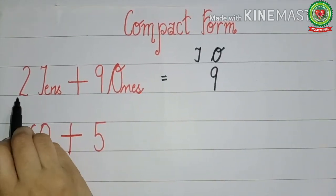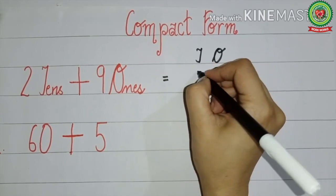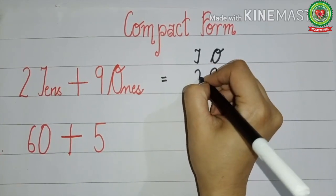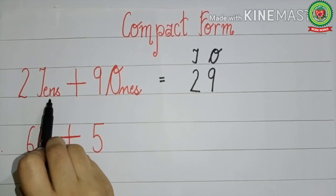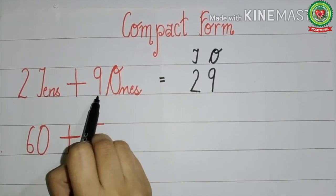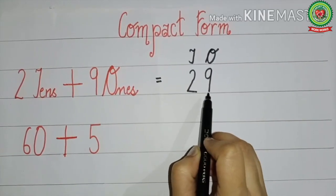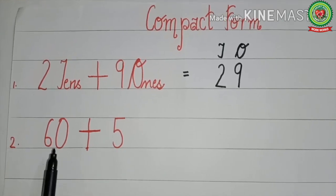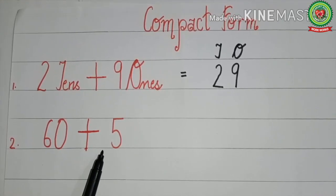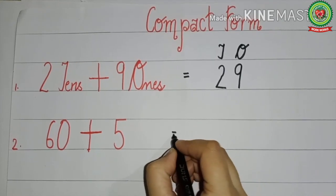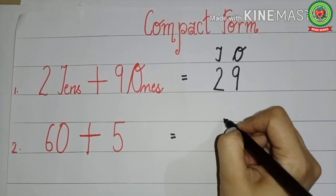What is written with tens? 2. So we write 2 under tens. That means 2 tens plus 9 ones equals 29. Now let's take another example: 60 plus 5.